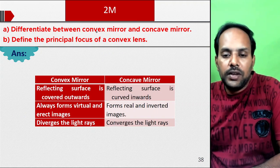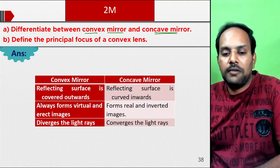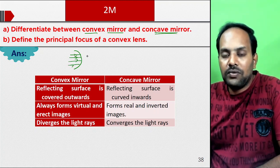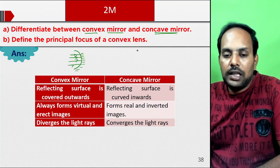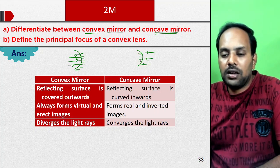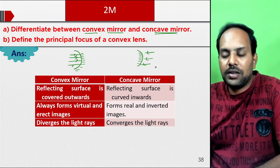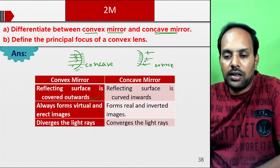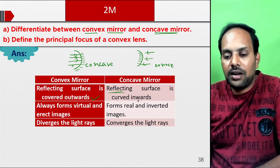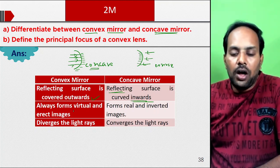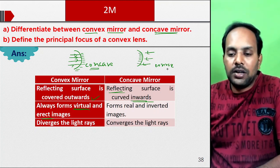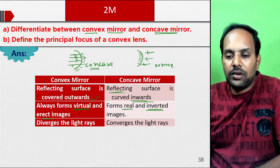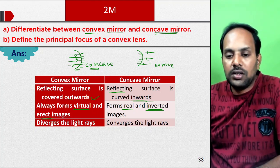Next 2-mark question: differentiate between convex mirror and concave mirror. A convex mirror has its reflecting surface curved outwards. A concave mirror has its reflecting surface curved inwards. A convex mirror always forms a virtual and erect image. A concave mirror can form real and inverted images. Light rays diverge after reflecting from a convex mirror, while a concave mirror converges light rays.